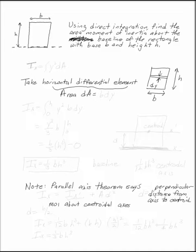So again, by definition, I'm looking at ix because I have a horizontal axis. That's going to be the integral of y squared dA. Again I'll take a horizontal differential element so that my dA has area bdy.